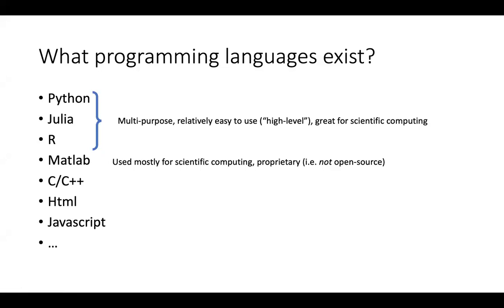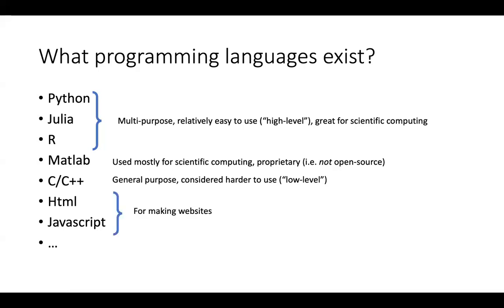MATLAB is mostly used for scientific computing but is proprietary, meaning it's not open source — you have to have a license to run it. C and C++ are more general-purpose, considered harder to use, and are called low-level languages. HTML and JavaScript are examples for making websites.